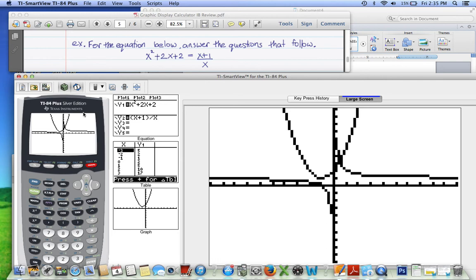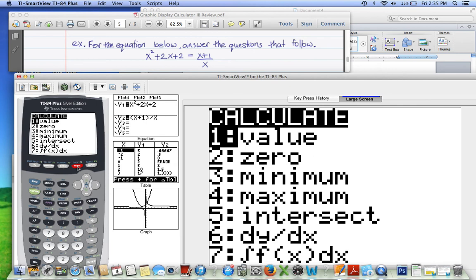So now in order to find the intersection, we have to follow a few steps. So again, the solution, since there's no y in this equation, the solution is the x value at the point of intersection. So in order to find the intersection point, you go to second, trace, and a bunch of options come up. The one that we want is the fifth one, which is intersect.